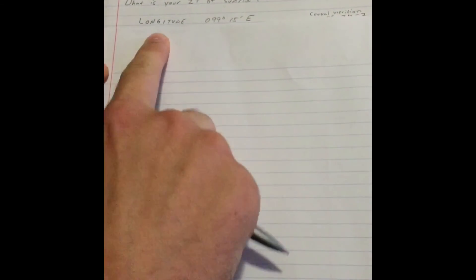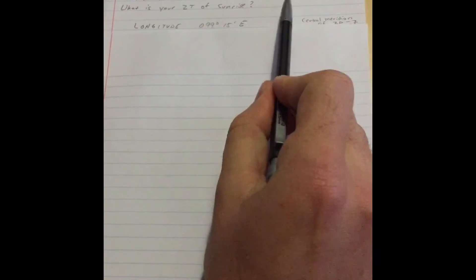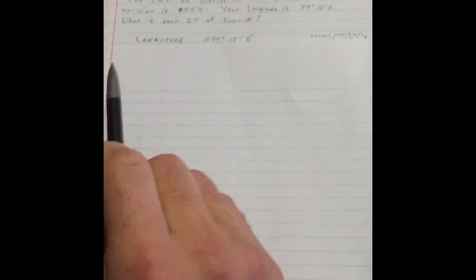So what we need to do first is write down our givens. The longitude, as stated above, is 99 degrees, 15 minutes east.